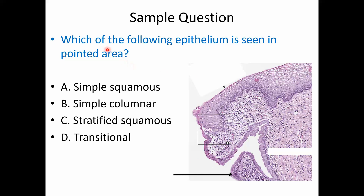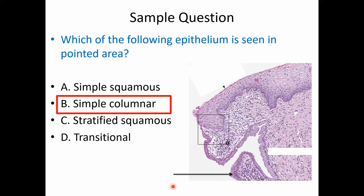Next question: which epithelium is seen in the pointed area? Options: simple squamous, simple columnar, stratified squamous, or transitional epithelium. The cells appear as a single layer with the nucleus towards the base, oval in shape — this is simple columnar epithelium, which is part of the endocervix. The ectocervix has stratified squamous epithelium.